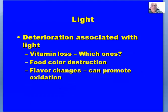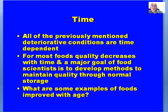Deterioration associated with light includes vitamin loss, color loss and color fading, flavor changes, and promotion of oxidation. Time is a factor because all of the previously mentioned deteriorative conditions are time-dependent. For most foods, quality decreases with time. A major goal of food scientists in developing food preservation methods is to maintain quality through the normal storage life of a particular food product. Can you think of some examples of food products that actually improve with age? That concludes the presentation looking at food deterioration.